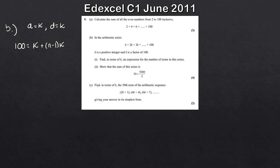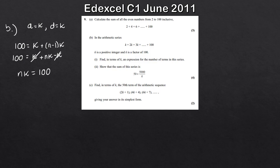Expanding the bracket: K plus NK minus K. The K and minus K cancel, leaving NK equals 100. To find N, the number of terms, we simply divide by K, giving N equals 100 divided by K.